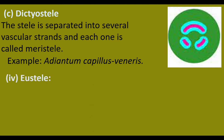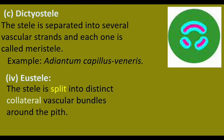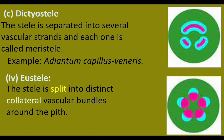Eostele is present in dicotyledons. The stele is split into distinct collateral vascular bundles arranged around the pith. In collateral vascular bundles, xylem and phloem are found side by side. In this picture, there are five vascular bundles — the red-colored xylem forms the central part and phloem forms the outer part of each bundle. These collateral vascular bundles are found around the pith, formed by the splitting of the stele. This is eostele, found in dicot stems.